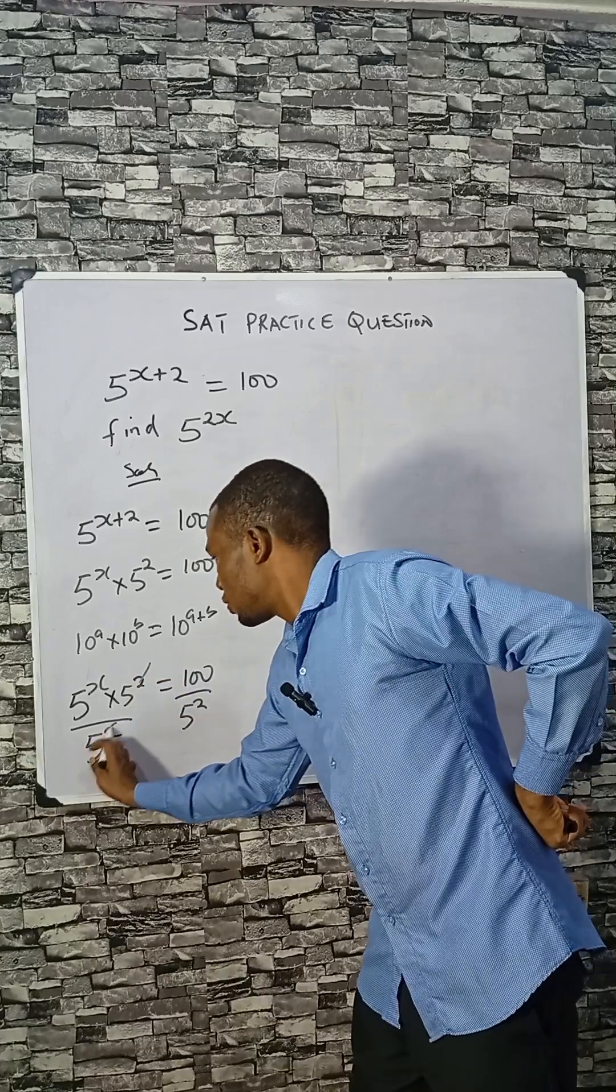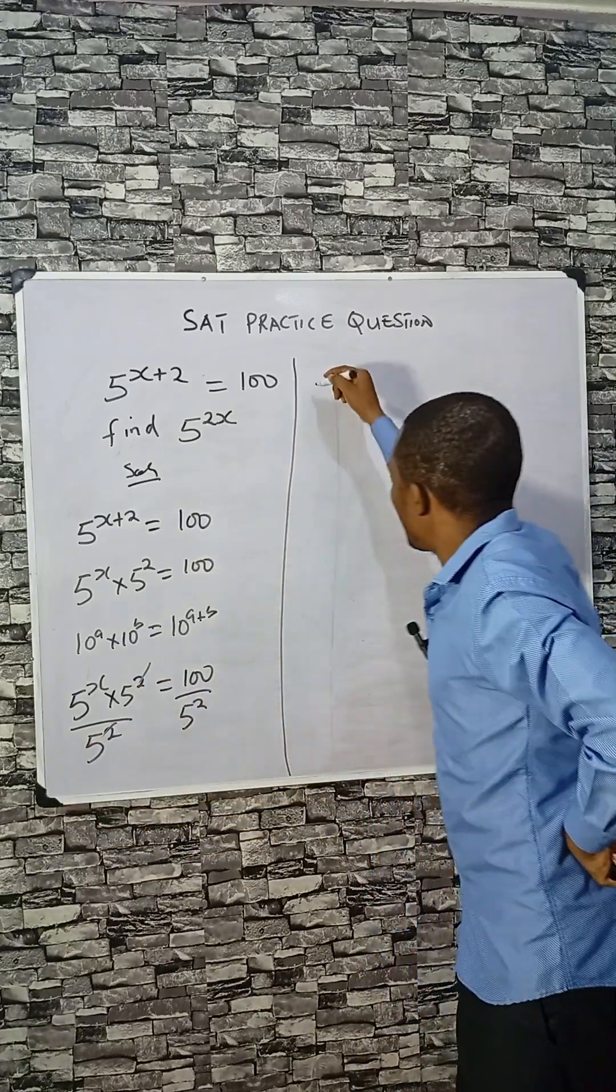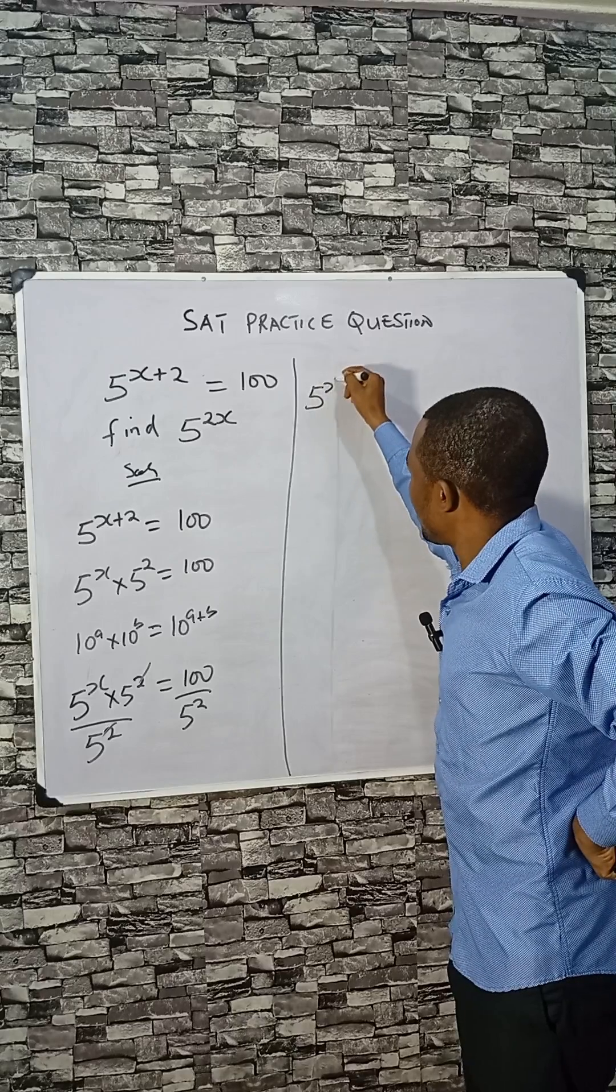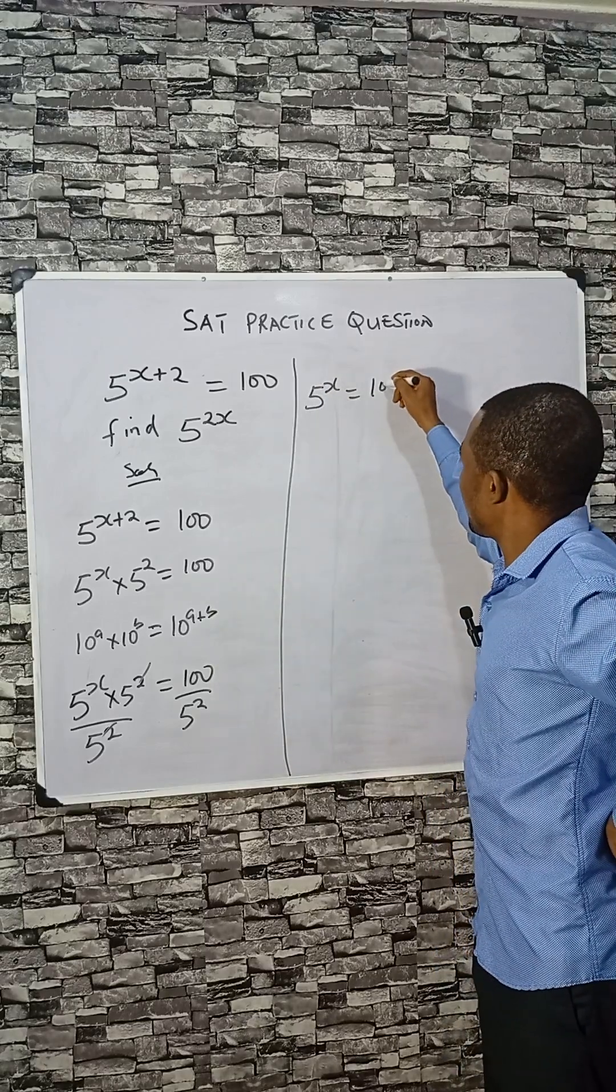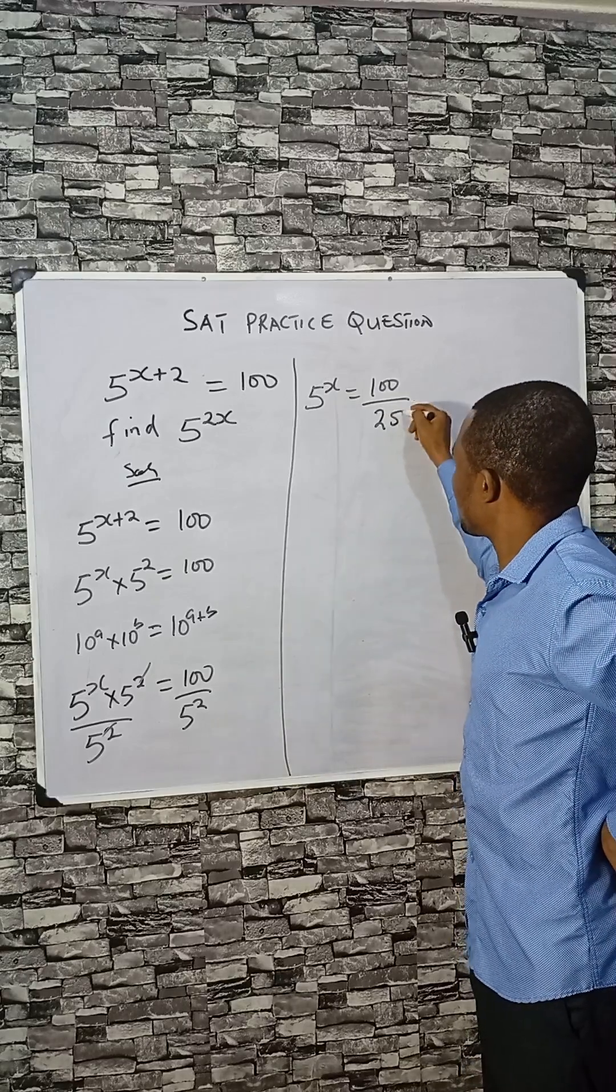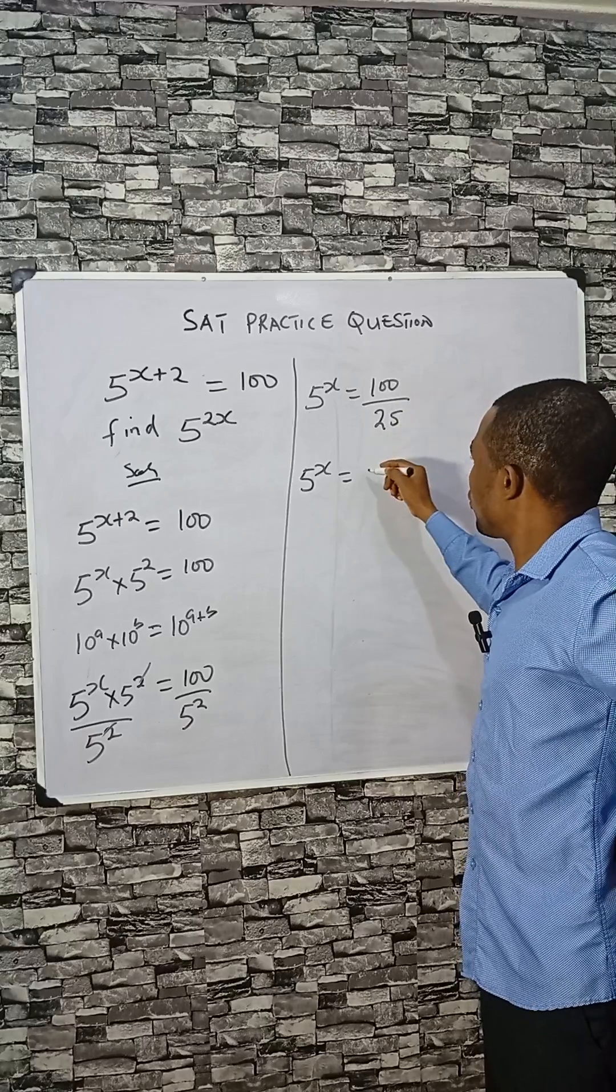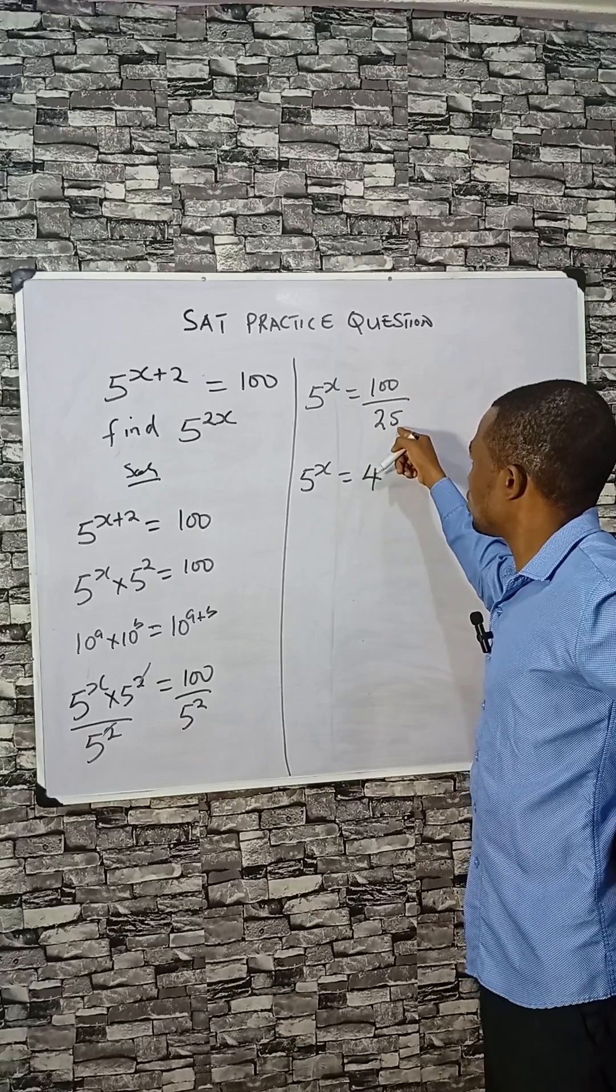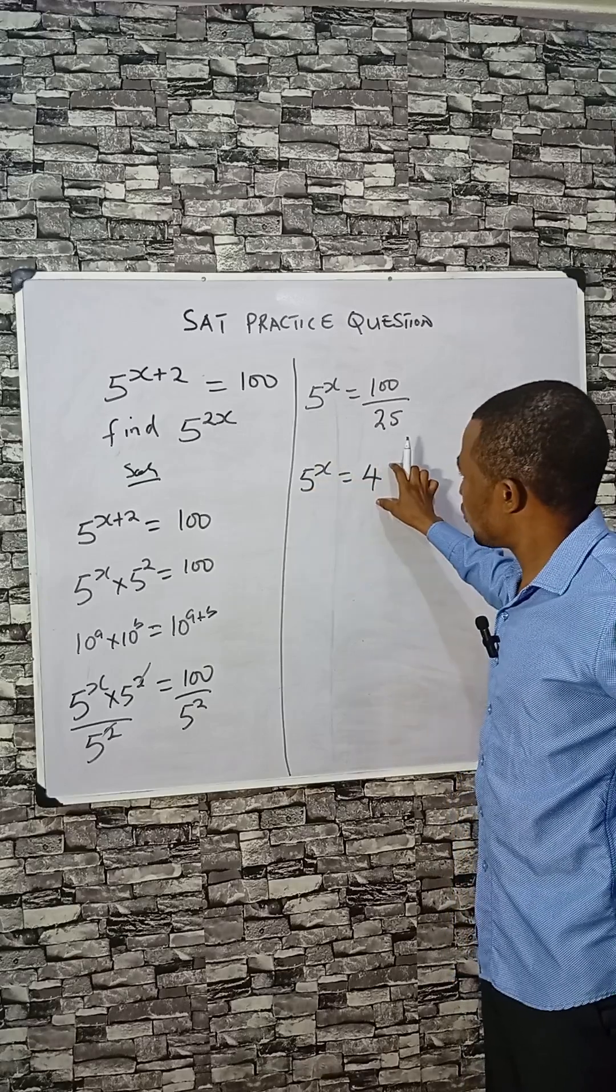So this can take care of this, and then we have 5 raised to the power of x equals 100 divided by 25. Because 5 raised to the power of 2 is 25, 5^x equals 4, because 4 times 25 is 100. So you have 5 raised to the power of x as 4.